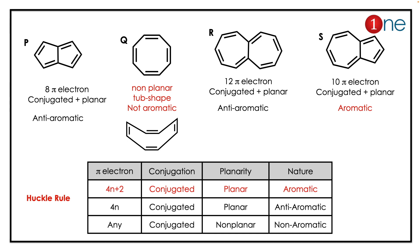The answer lies in Hückel's rule. Hückel's rule states that if a compound has 4n+2 pi electrons in conjugation and is planar, it is aromatic. If it has 4n pi electrons, it is anti-aromatic. If there is no planarity, it is non-aromatic. Let us analyze each compound one by one.